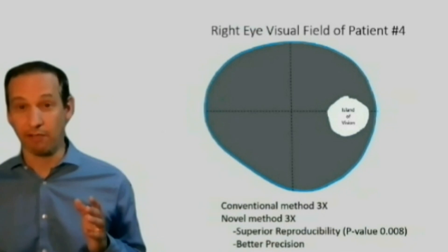Lastly, we found that the novel method could more precisely define the location of preserved peripheral vision.